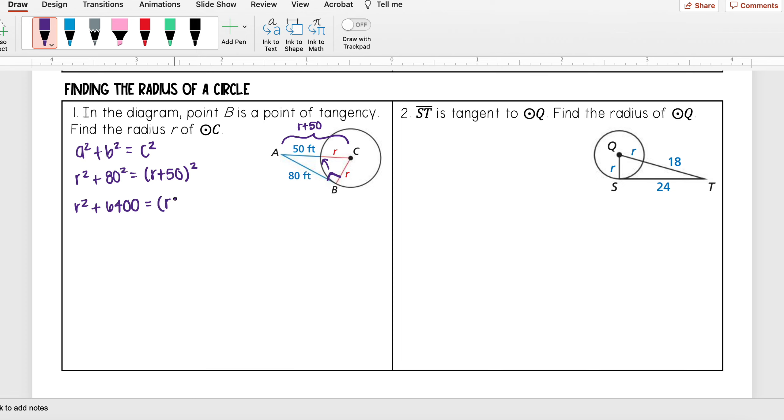So R + 50 squared is the same thing as saying R + 50 times R + 50. And then now I need to multiply this out. When I do that, I do R times R and I get R², R times 50 and I get 50R, 50 times R and I get 50R, and then 50 times 50 and I get 2500.